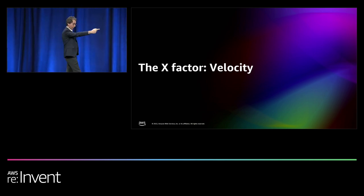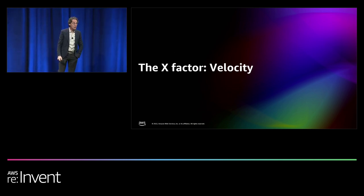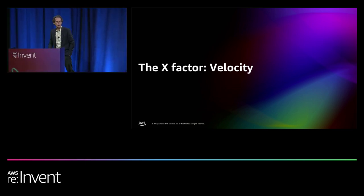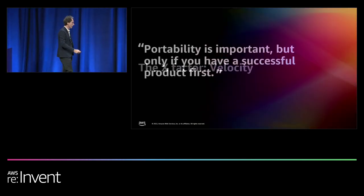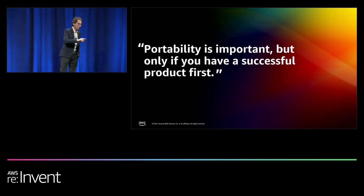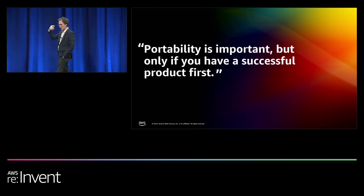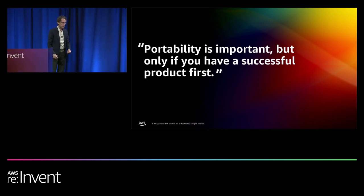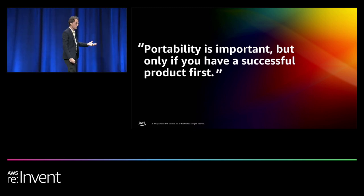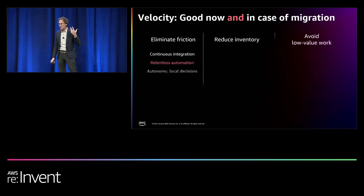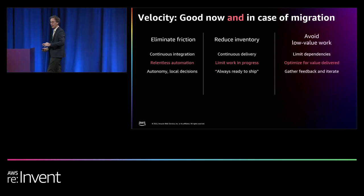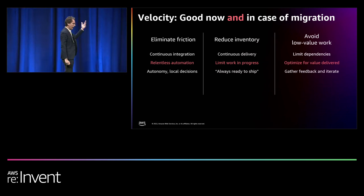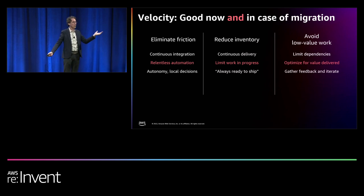Let's think back about the X-factor — the new dimension. What if there's something very different we can do to reduce switching costs without giving up all the cool things we want? I think we have one, and that is called velocity — the speed at which you work. Portability is important, but only if you're successful. If you're slower today and don't build anything that's successful in the market, you'll never have to port. So don't compromise today's success for a future promise. How do you gain velocity? Take friction out of your software delivery cycle. Reduce your software inventory — any line of code not in production is inventory, slowing you down and costing money.